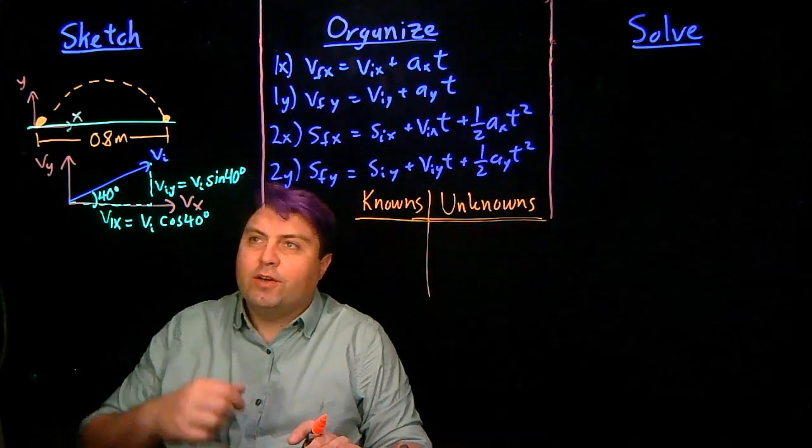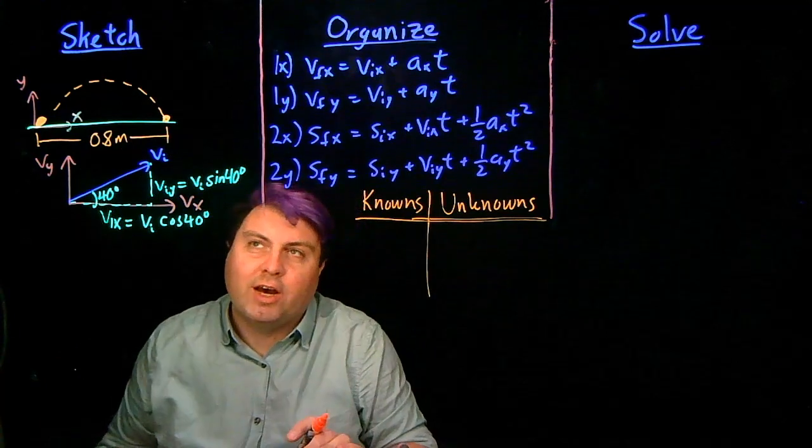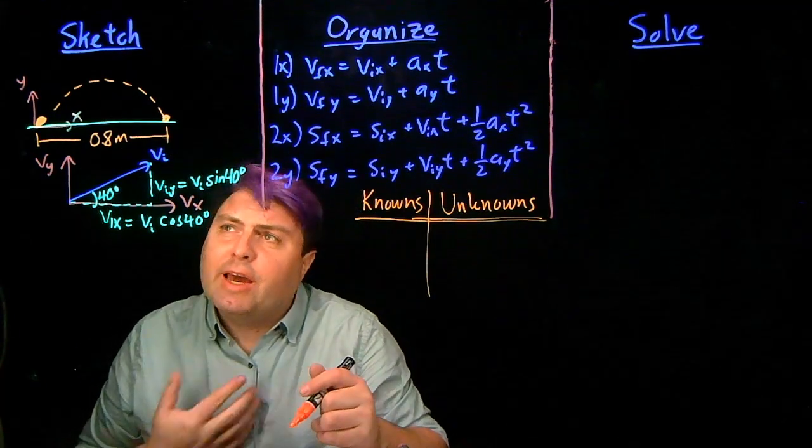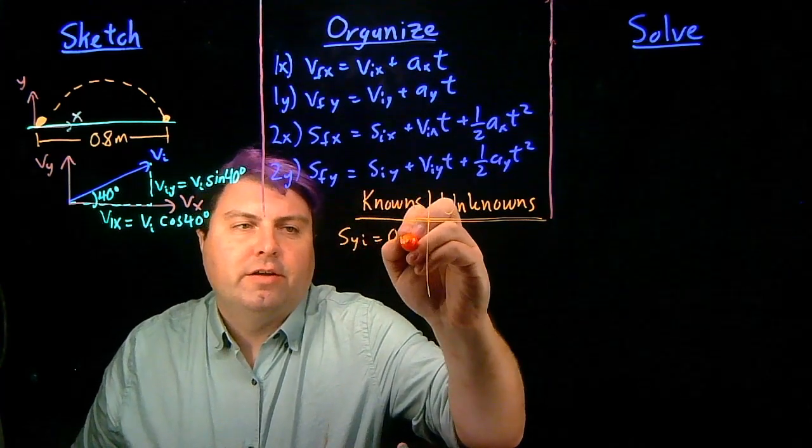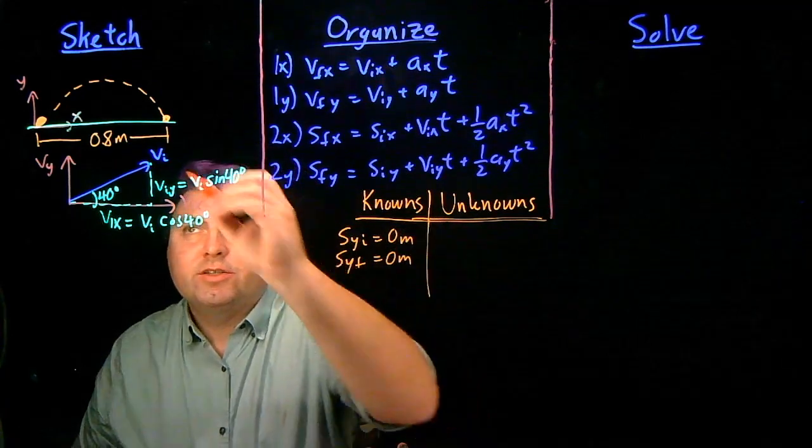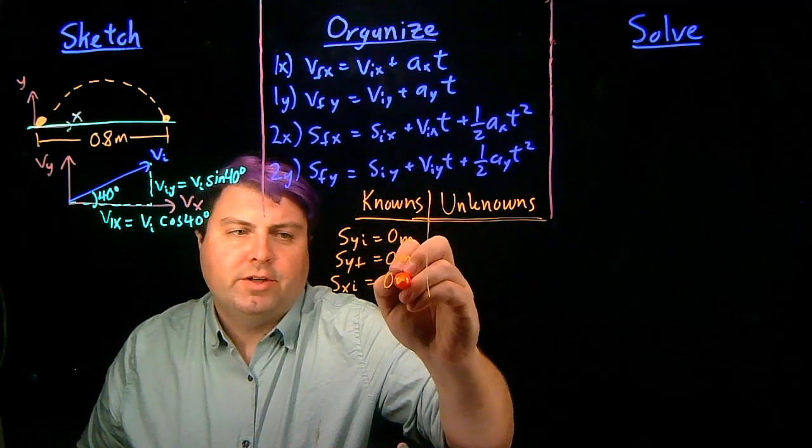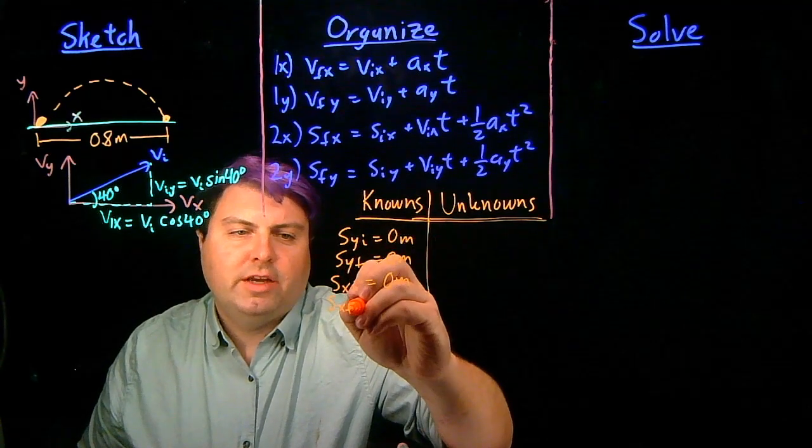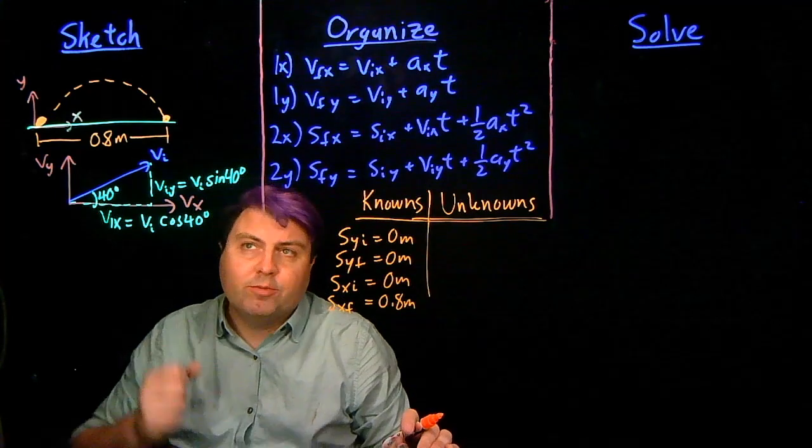So in our knowns and unknowns, we actually know that the frog's initial position and final position in the y are the same, and we might as well have them be zero to make our lives a little bit easier. So we can say syi is zero meters, syf is zero meters. Our initial position in the x, sxi is zero meters, and our final position in the x is 80 centimeters, or 0.8 meters.